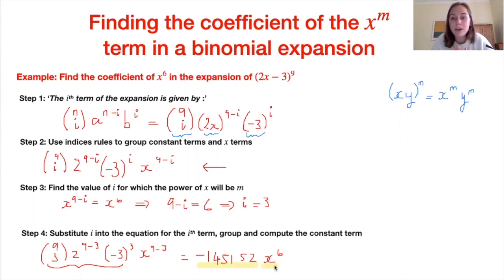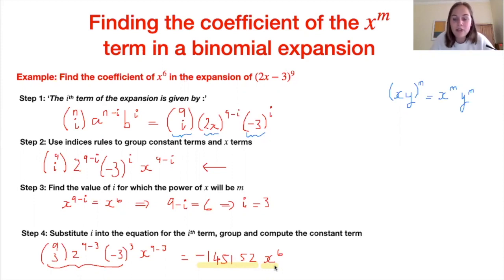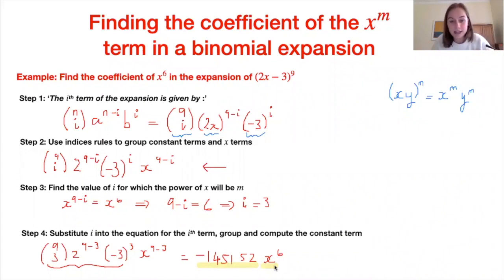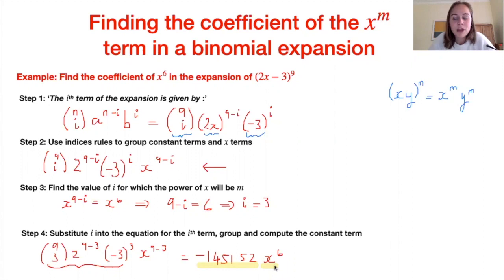To recap the three steps: first, write an expression for the ith term in the expansion using the general formula. Second, manipulate that expression to separate the constants that form the coefficient from the x term. Third, look at the x term, find the value of i that gives x^6 — here i = 3 — and substitute back to get the coefficient.